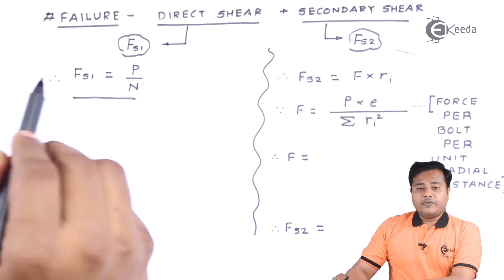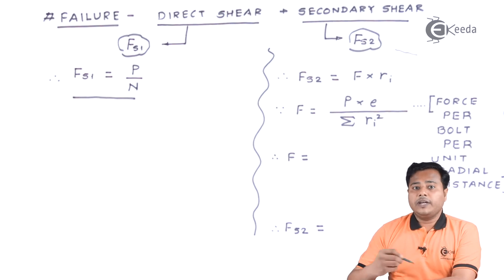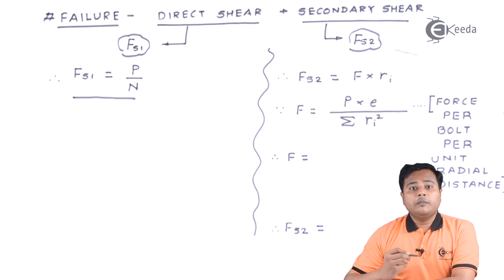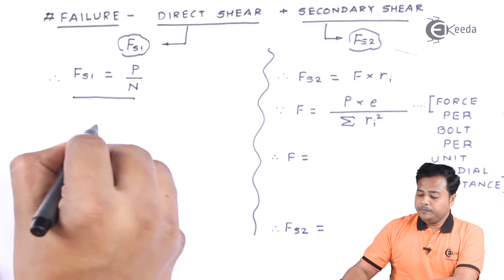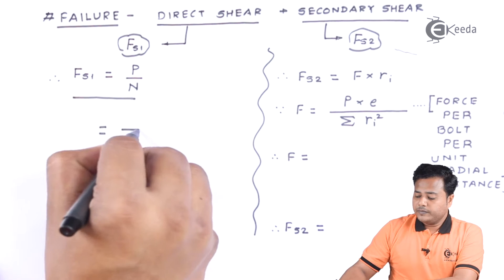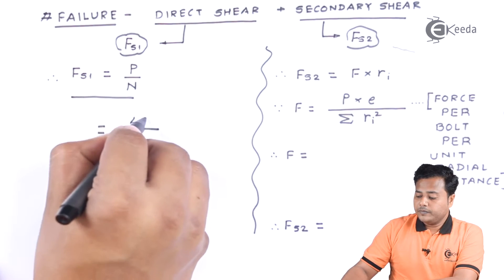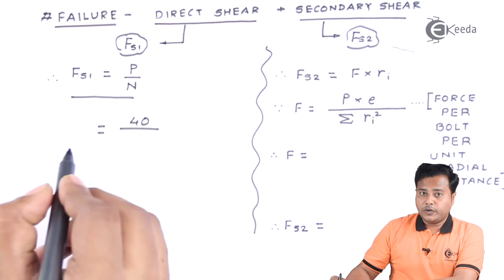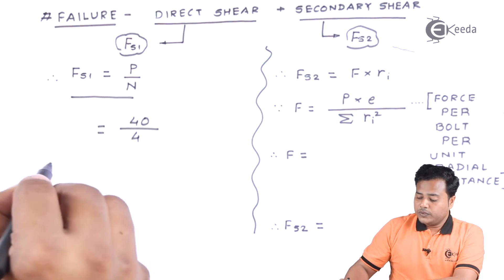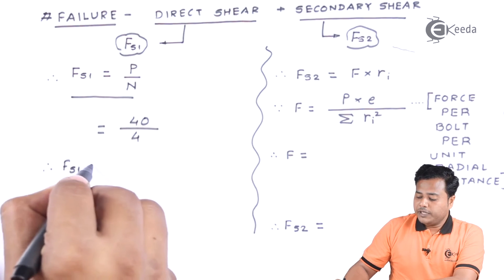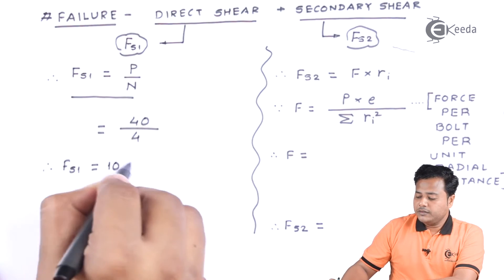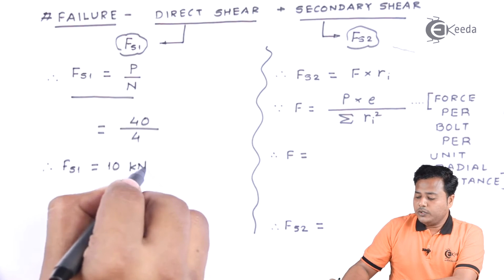The direct shear formula is very simple — it is the given load divided by the number of bolts. We have four bolts, so the load is 40 kilonewton divided by 4. Therefore, the direct shear force becomes 10 kilonewton.